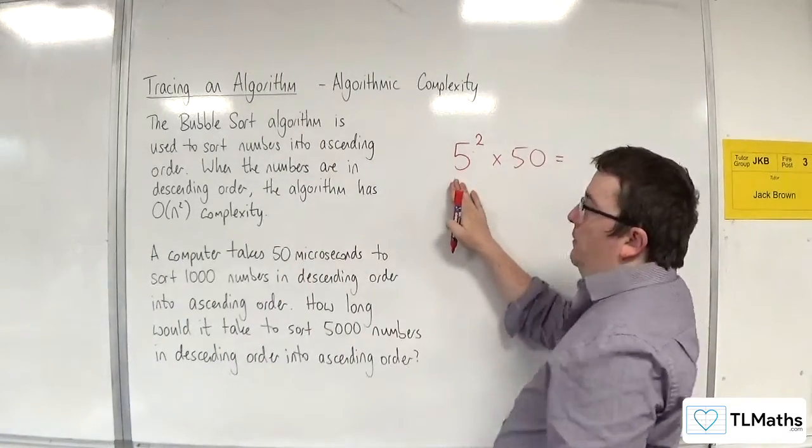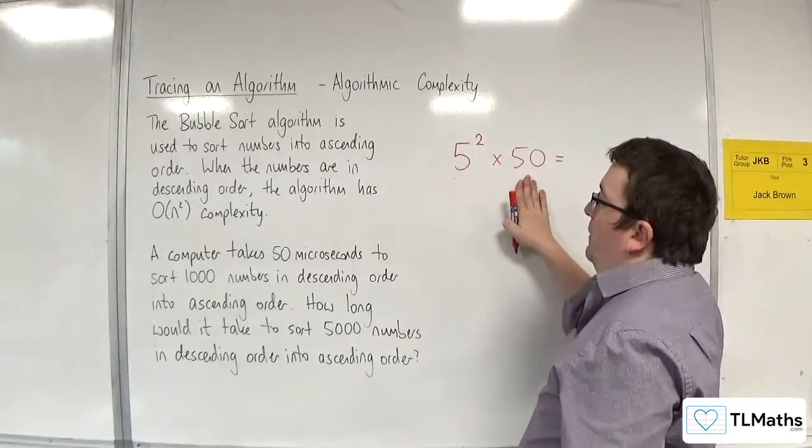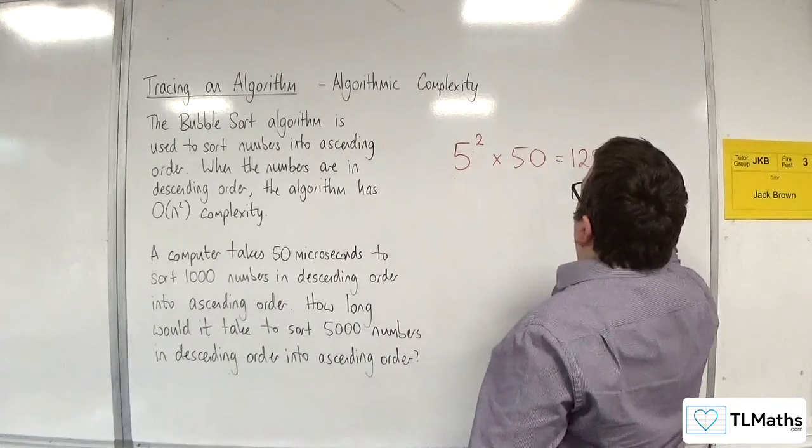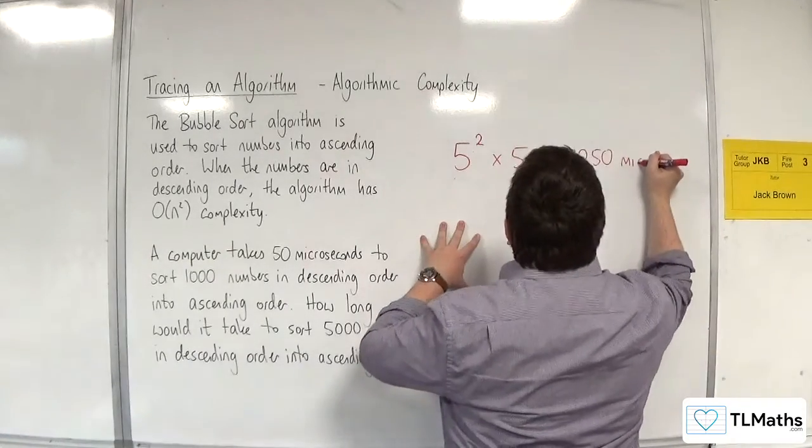So 5-squared, 25, times by 50, so that would be 1,250, and it's microseconds.